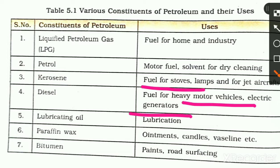The fifth product is lubricating oil. A lubricant is used to reduce friction — you already studied this in your physics class. We can use oil, grease, etc. as lubricants. So lubricating oil, as a petroleum product, is also used for lubrication, that is, to reduce friction.